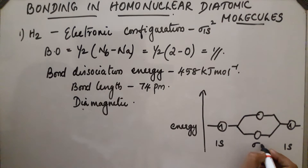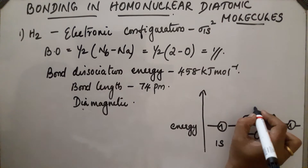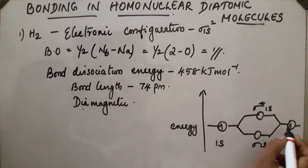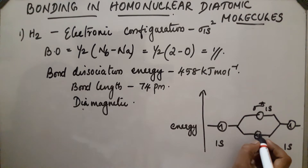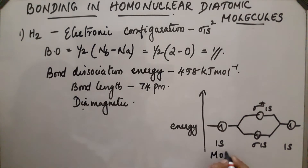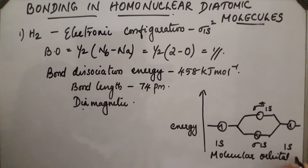The 1s orbitals from both hydrogen atoms combine to form sigma 1s and sigma star 1s molecular orbitals. Both electrons are filled in sigma 1s. This is the molecular orbital diagram of the H₂ molecule.